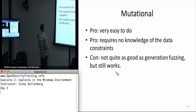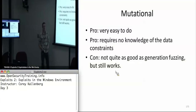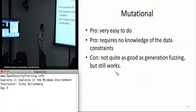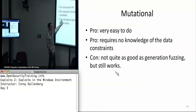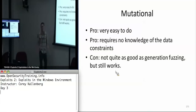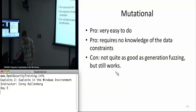Mutational fuzzing has the big advantage of being very easy to do. You can just write a script and download a whole bunch of PDF documents or whatever document you're trying to fuzz. Because it's not quite as good in general — empirical evidence shows it doesn't generate quite as good bugs as generational fuzzing — but it still works and still generates bugs. So why make life harder on yourself if this approach is going to work?